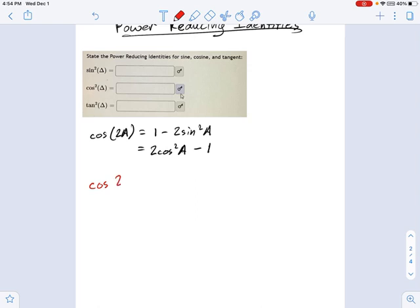This says cosine of 2 times an angle equals 2 cosine squared A minus 1. Well, if I just rearrange this a little bit, what do I get? Cosine of 2 times an angle plus 1. Okay, that's right there. And then on this side, on the right side, I still have 2 cosine squared of A. Well, how about I divide each side by 2? So what do I get?